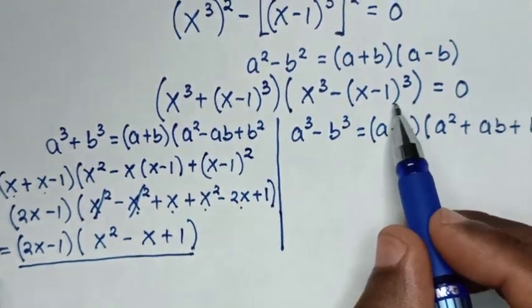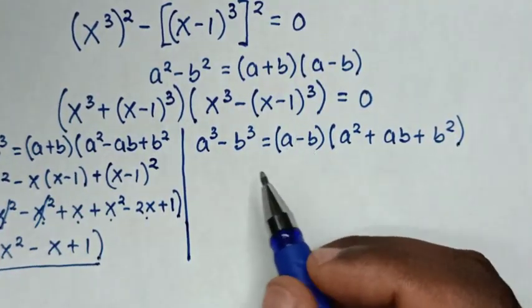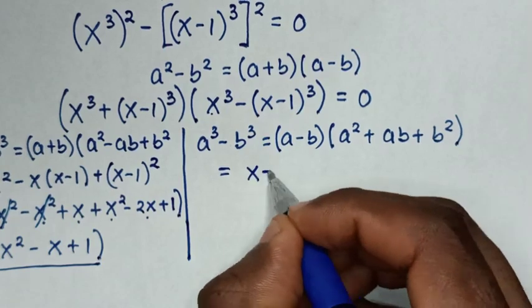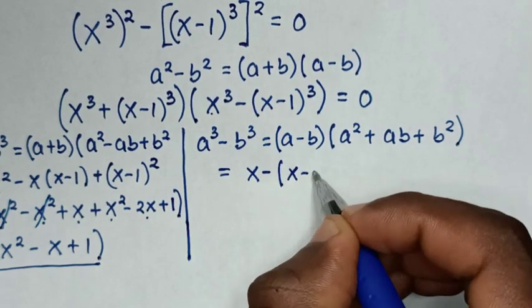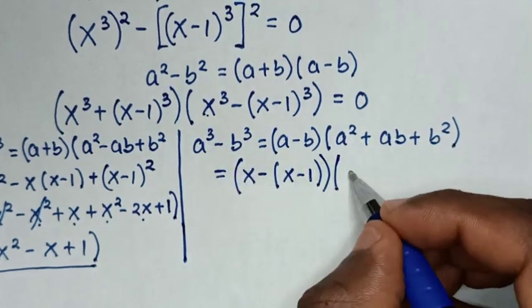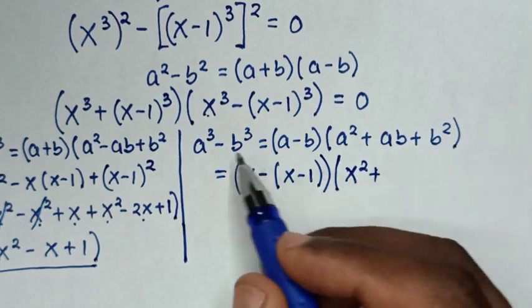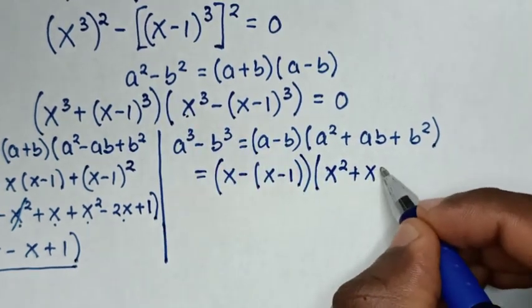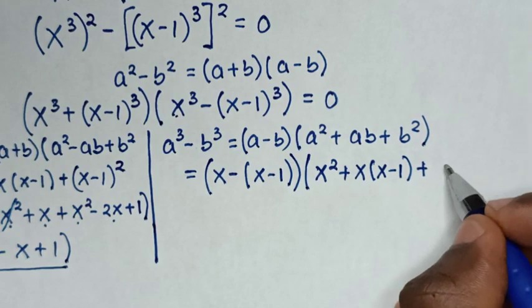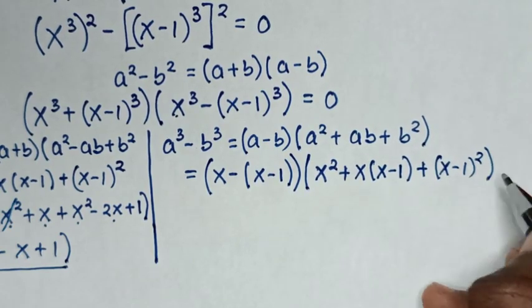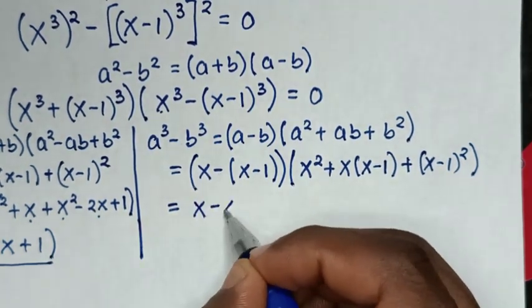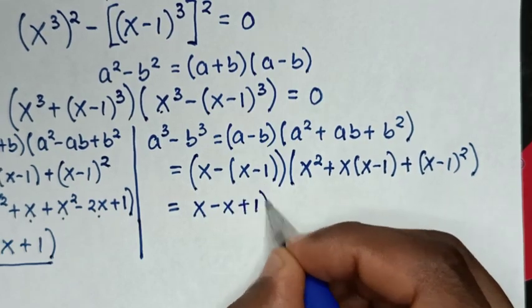For the second part, a minus b is x minus (x minus 1). So it equals (x minus (x minus 1)) times (x² plus x(x minus 1) plus (x minus 1)²). Expanding: x minus x plus 1 gives 1, and x² plus x² minus x plus x² minus 2x plus 1.